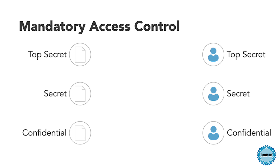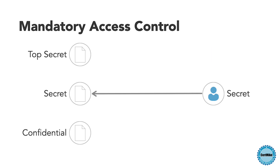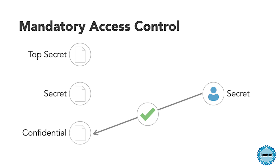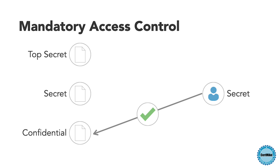The mandatory access control system is then responsible for comparing these labels. If a user with a secret clearance attempts to access a secret document, that's allowed. If that same user attempts to access a confidential document, that is also allowed, because a user with a secret clearance is authorized to access documents at the secret level or lower, and confidential is a lower classification than secret. However, if that user attempts to access a top secret document, that access attempt is rejected because the user is not authorized to access top secret information — it's above their clearance level.